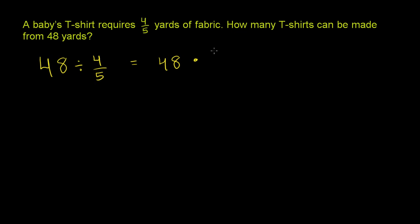So if we have four-fifths here, that'll be five over four, the reciprocal. Now, this still might say, hey, I have a whole number here and a fraction. You just have to remember, any whole number can be written as a fraction. This is the same thing as 48 over 1 times 5 over 4.